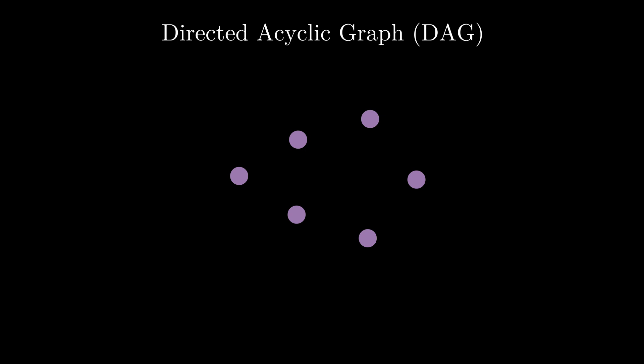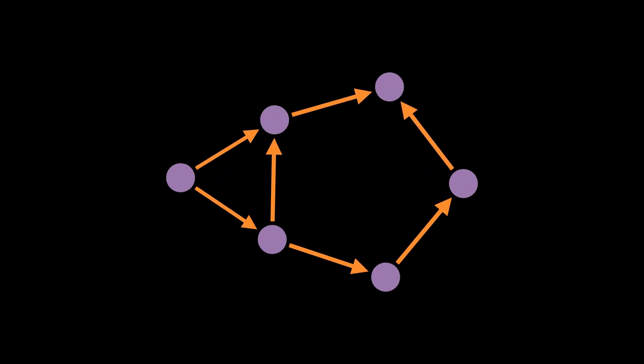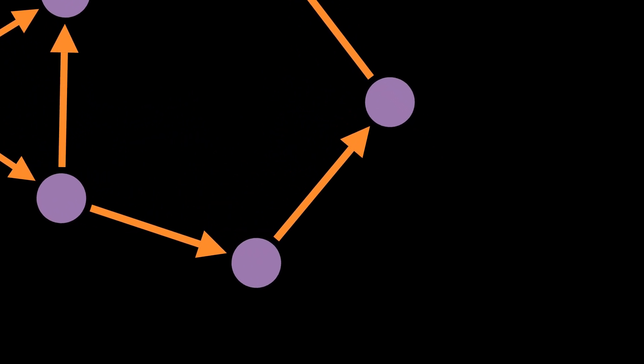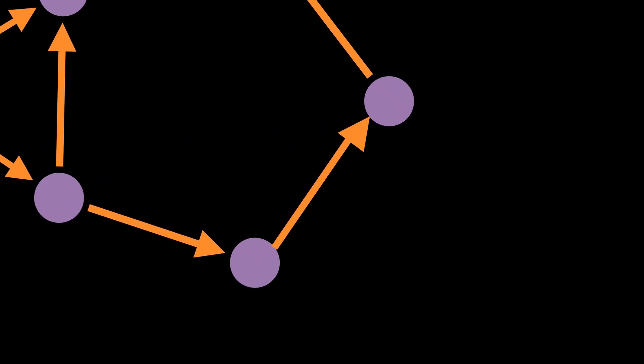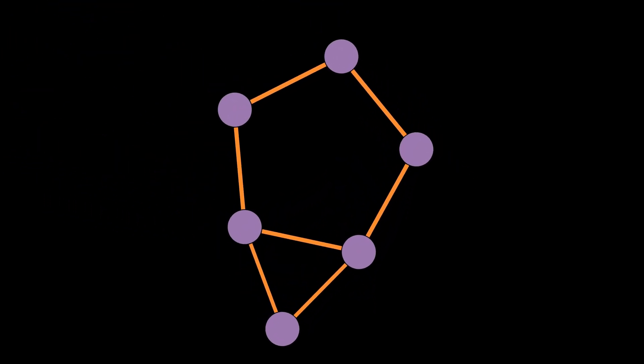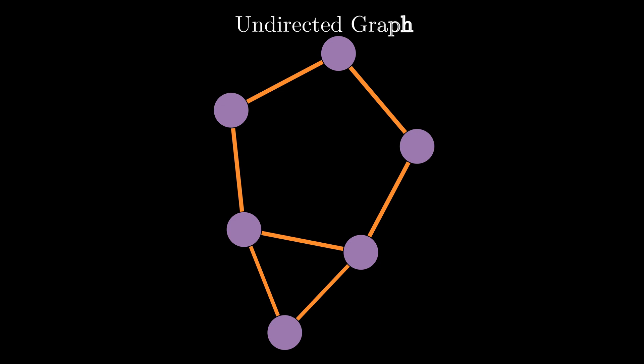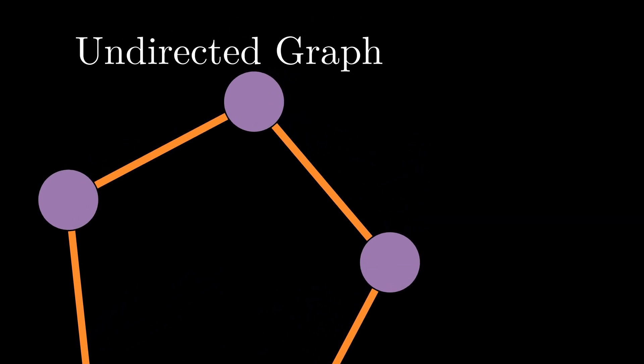A directed graph is simply a graph whose edges are directed or have a direction. For example, this edge is directed towards this node, which means that there is a path to this node from this node, but there is no path back to this node from this node. This is in contrast with undirected graphs where the edges of the graph do not have directions. In the case of undirected edges, the edge can be traversed in either direction.